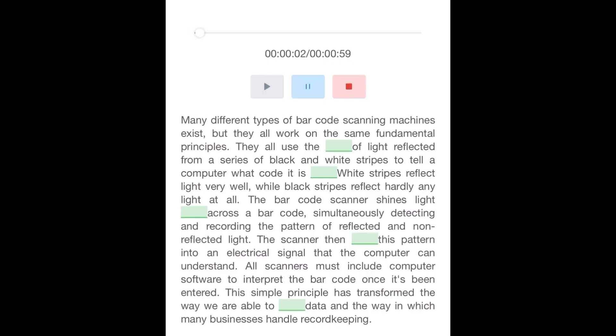Many different types of barcode scanning machines exist, but they all work on the same fundamental principles. They all use the intensity of light reflected from a series of black and white stripes to tell a computer what code it is seeing. White stripes reflect light very well, while black stripes reflect hardly any light at all.